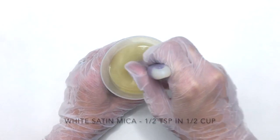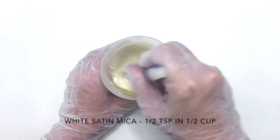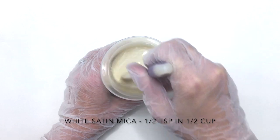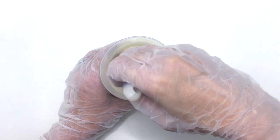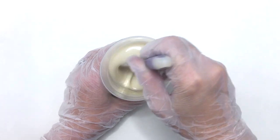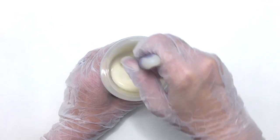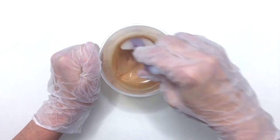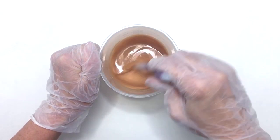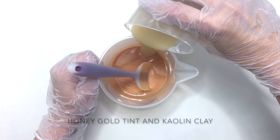I'm using my usual rate of white satin mica, which is a half a teaspoon and a half a cup of soap. I add a half a cup of soap to the honey gold tint, and then I'll add in the white kaolin clay.